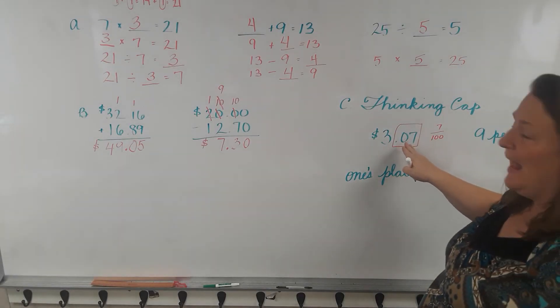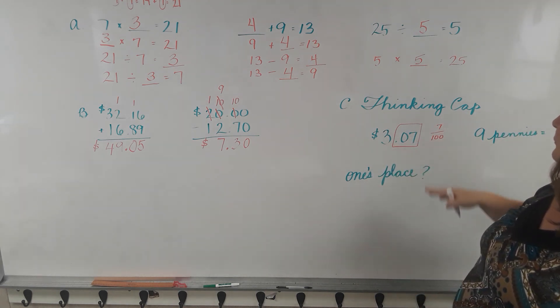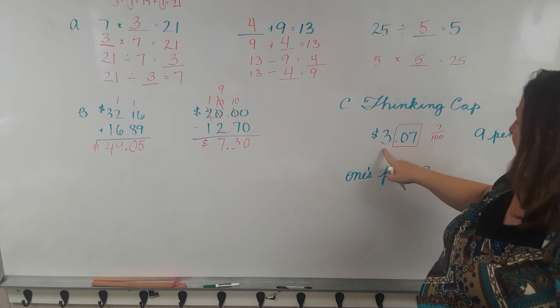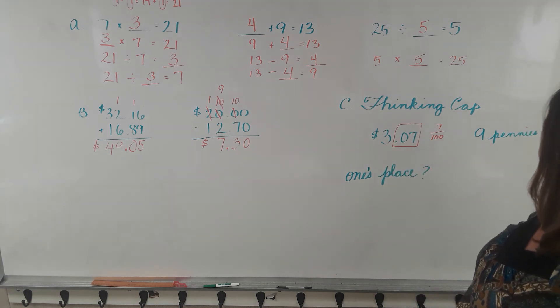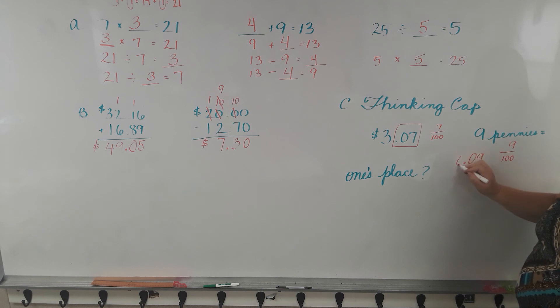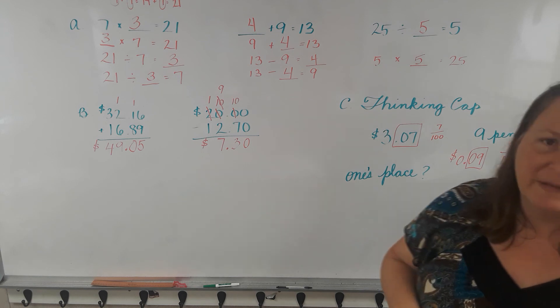And this is 7 cents, so this is 7 pennies. So this is 7 hundredths of a dollar. So the 3 is in the ones place for the dollars. 9 pennies would equal 9 one hundredths of a dollar. It would equal 9 cents. Go ahead and do your classwork and seat work for lesson 156.